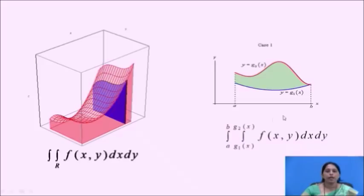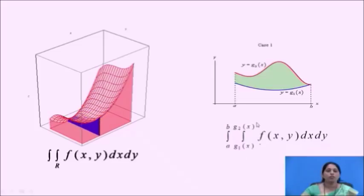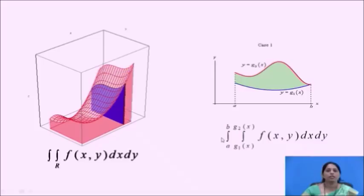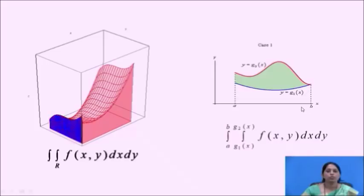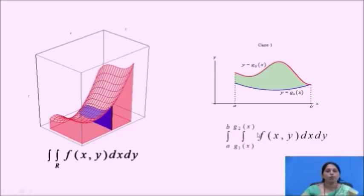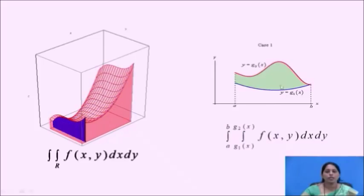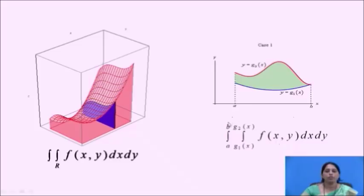In a two-dimensional diagram, the inner integral has the limits as a function of x. So these are the limits of y, and the outer integral limits are the limits of x. We draw the lines x equals to a and x equals to b. The region of integration is between the two lines and from y equals to g1 of x to y equals to g2 of x. The region between these two curves and between these two lines is the region of integration, which gives us the value of this integral.